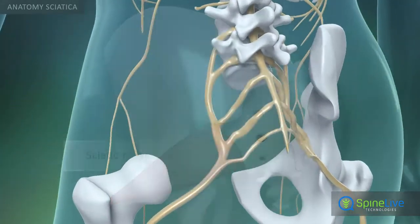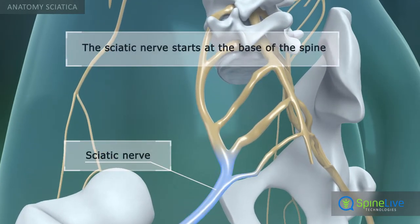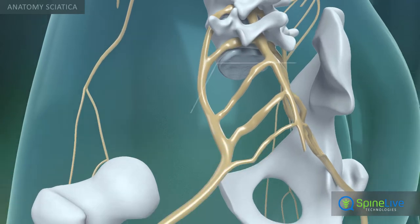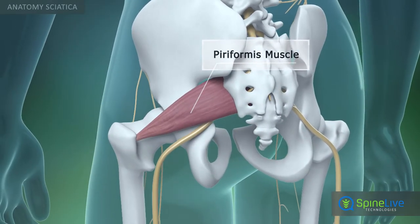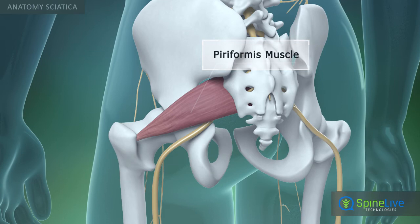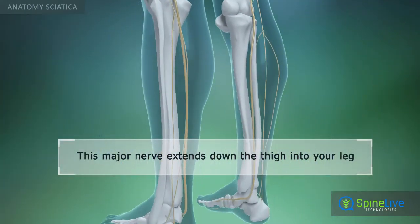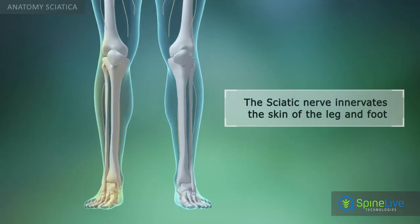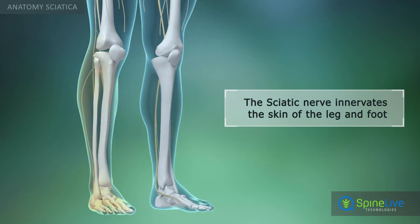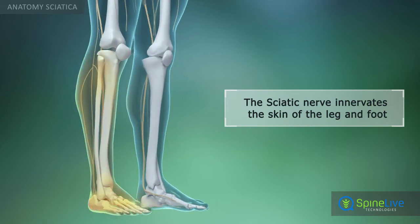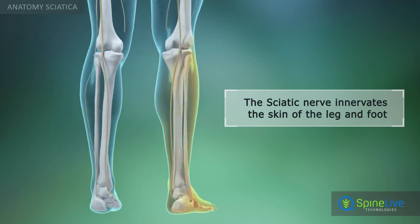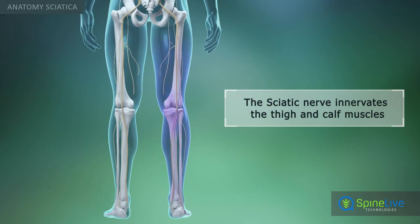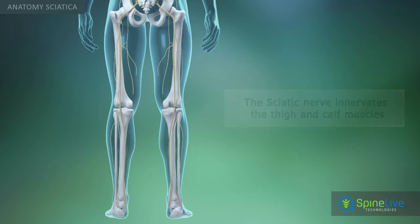The sciatic nerve is one of the body's major nerves. It begins from a group of spinal nerves at the base of the spine, runs under the piriformis muscle, and then extends down into the thigh and leg. The sciatic nerve supplies sensation to the skin of the leg and foot. It also supplies the muscles in the back of the thigh and in the calf.